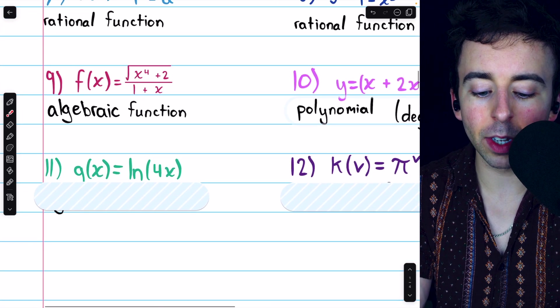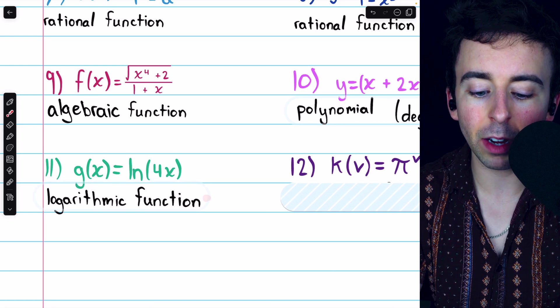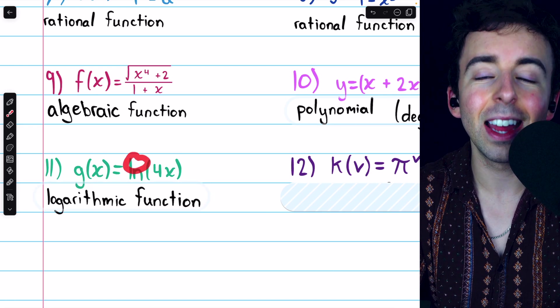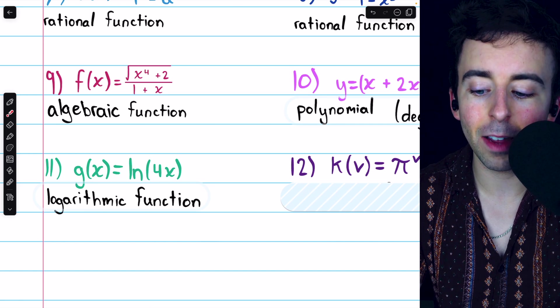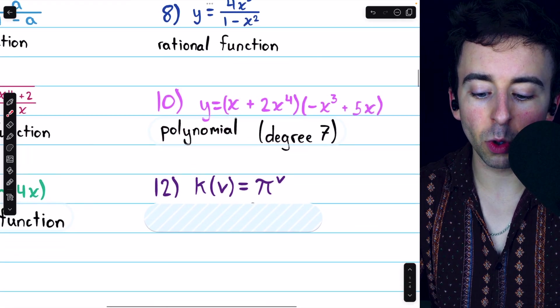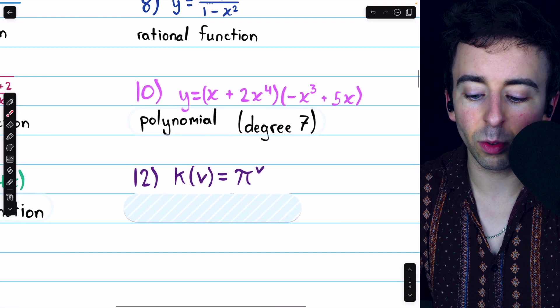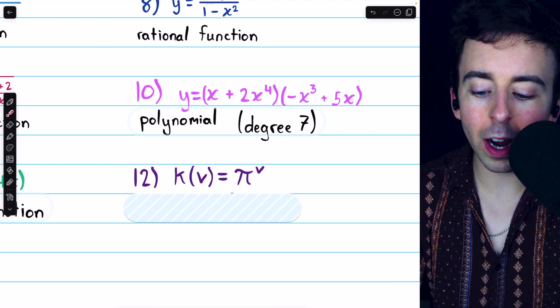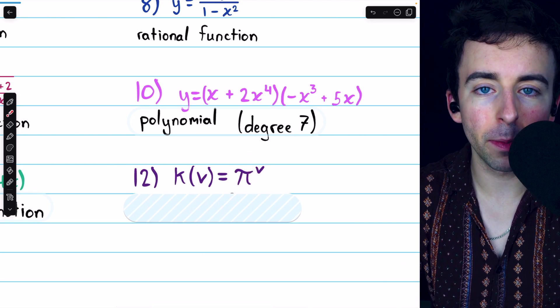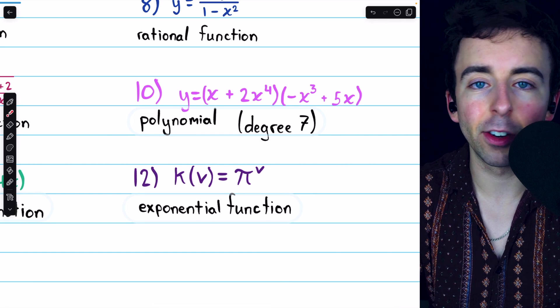Then number 11, g of x equals the natural log of 4x. This is again a logarithmic function, but this is what we call the natural log, which has a base of that nice number e. Finally, number 12, k of v equals pi to the v. This is just like number 6. We have an irrational number raised to the power of a variable. Since there's a variable in the exponent, this is an exponential function.